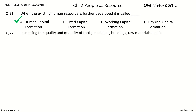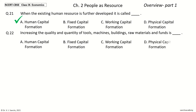Question 22: Increasing the Quality and Quantity of Tools, Machines, Buildings, Raw Materials, and Funds is ___. The options are: Human Capital Formation, Fixed Capital Formation, Working Capital Formation, Physical Capital Formation. Your time to choose. And the answer is: Fixed Capital Formation — also known as Physical Capital Formation.